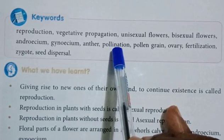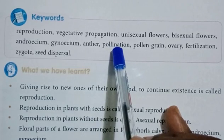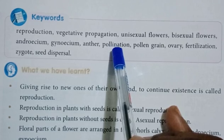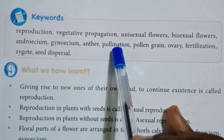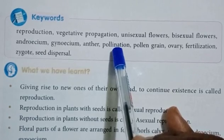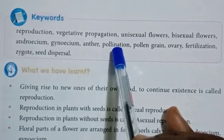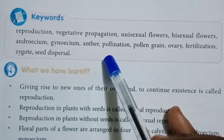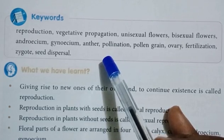Pollination is the process of transferring pollen grains from the anther to the stigma. Pollen grain is a single cell which produces male gametes and is released from the anther.